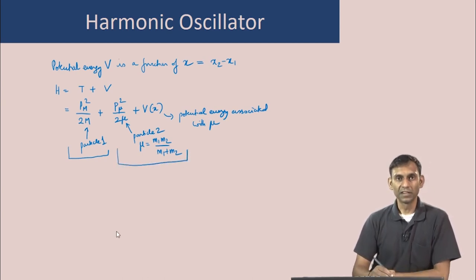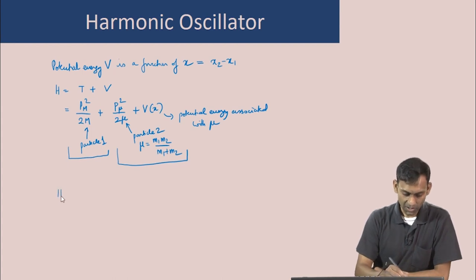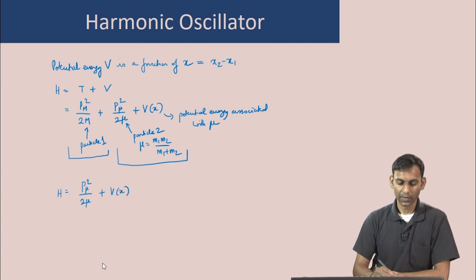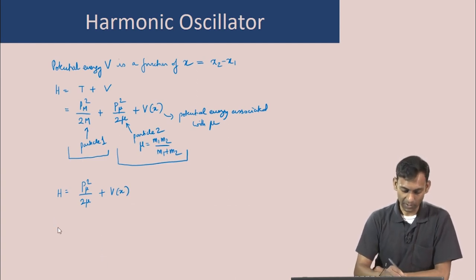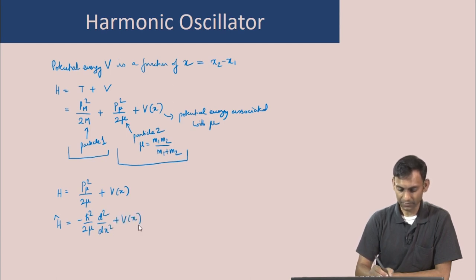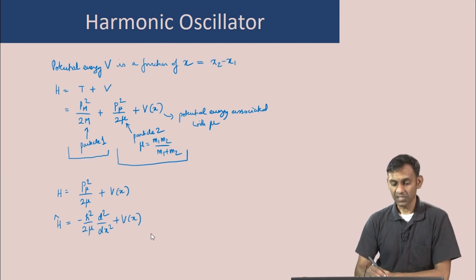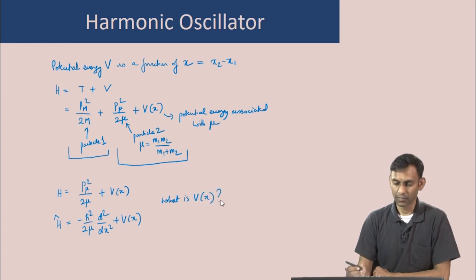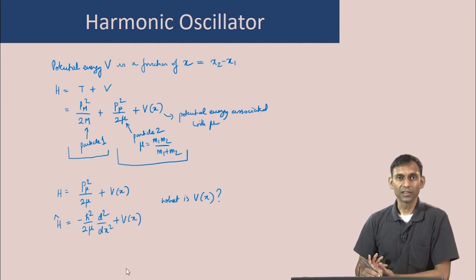The Hamiltonian of interest is H = p_μ²/(2μ) + V(x), and the quantum mechanical operator form becomes H = −ℏ²/(2μ)·d²/dx² + V(x). The question is: what is V(x) for a diatomic molecule?